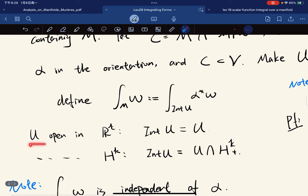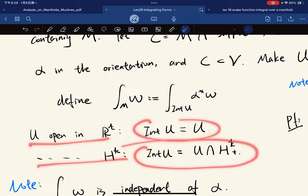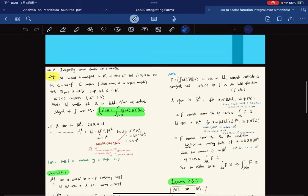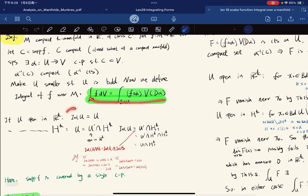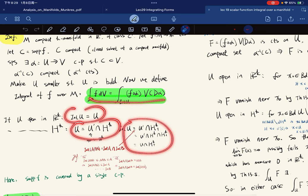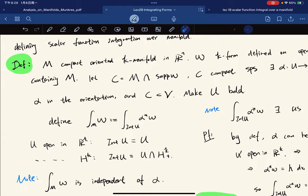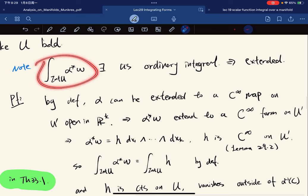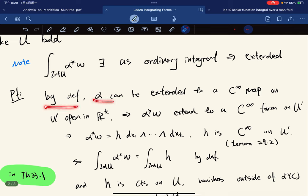If U is open in R^k we have this, if U is open in H^k but not R^k we have this. Those are the same, they're all similar from the previous lecture. There are so many similarities so we just abbreviate them. Note this integral exists as an ordinary integral, so it can be extended. First, by definition, this can be extended to a C^∞ map, a smooth map on U' open in R^k.